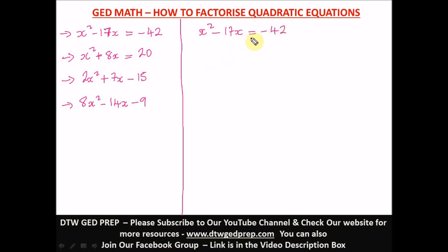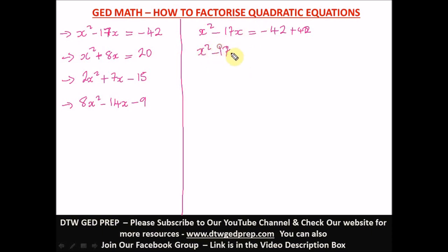Taking a negative sign to the other side makes it positive. Another way is to add 42 to both sides — when you add 42 here, the negative 42 becomes zero. So we have x-squared minus 7x plus 42 equals zero.